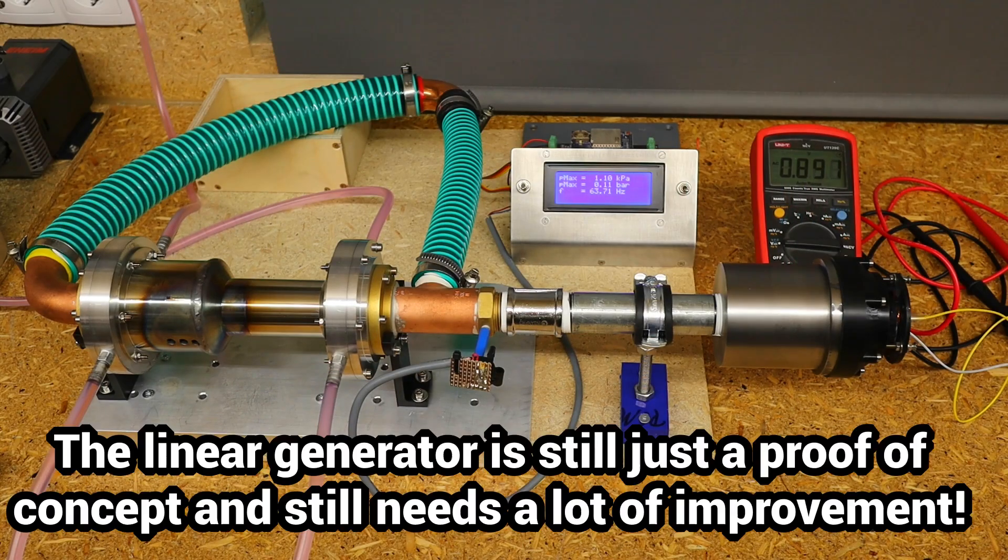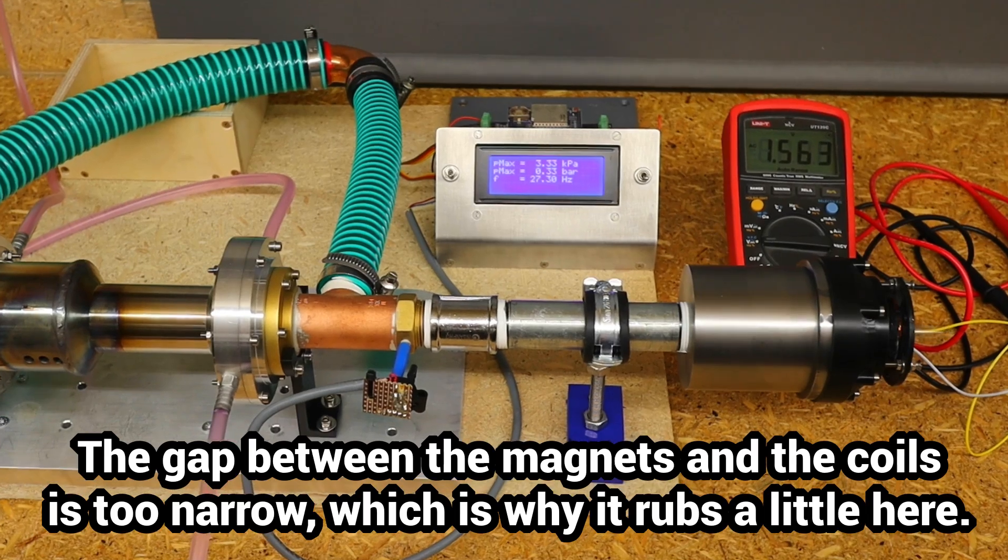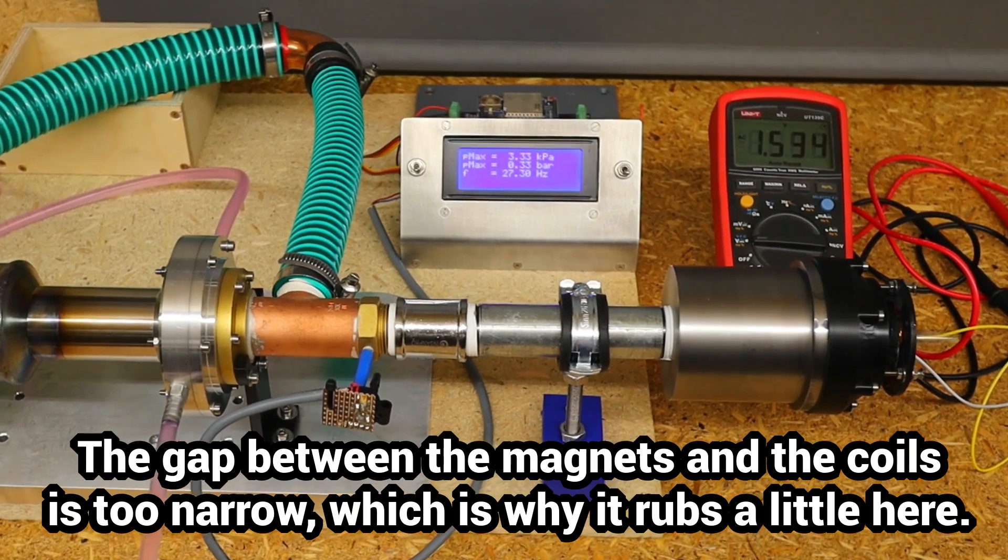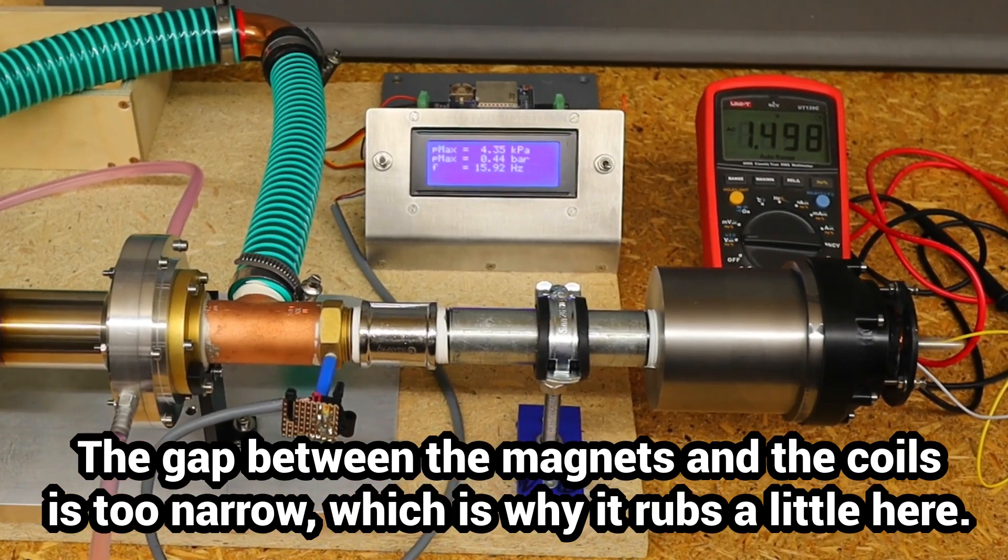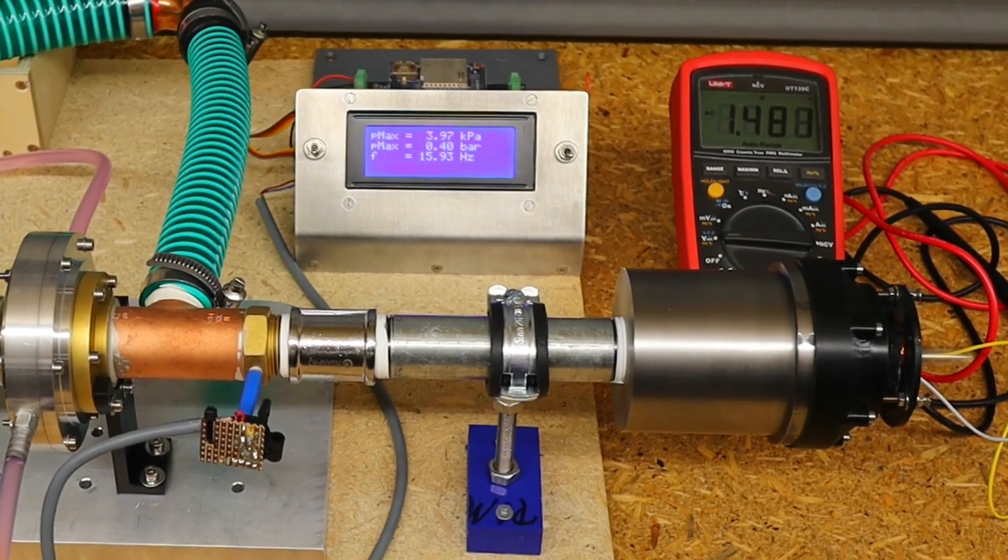The generator works very satisfactorily and delivers up to 3 volts AC. It is still very underpowered and I probably won't be able to avoid using iron cores for higher values. I would be grateful for any suggestions on how to increase the electrical output significantly using relatively simple means.